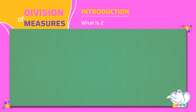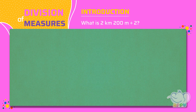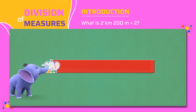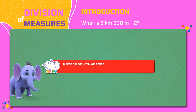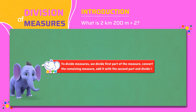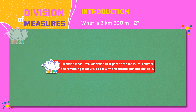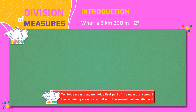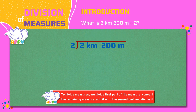What is 2 kilometers 200 meters divided by 2? To divide measures, we divide the first part of the measure, convert the remaining measure, add it with the second part and divide it. We write the division bracket and write 2 outside the bracket and 2 kilometers 200 meters inside the bracket.